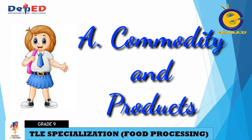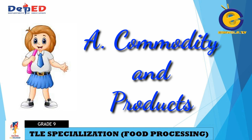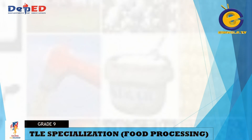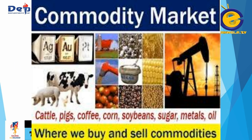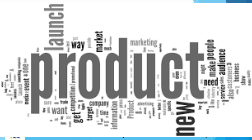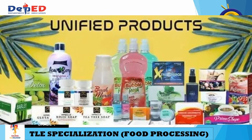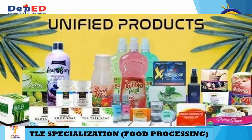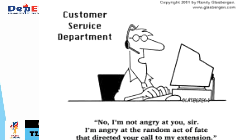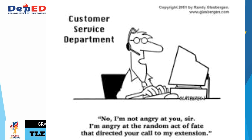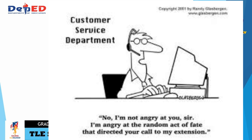The first key concept of market is commodity and products. A commodity is a basic good used as an input in the production of goods and services. A product, on the other hand, is the finished goods sold to consumers. It is a tangible item that is put on the market for acquisition, attention, or consumption, while a service is an intangible item which arises from the output of one or more individuals. In most cases, services are intangible, but products are not always tangible.